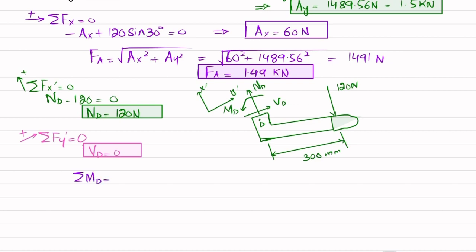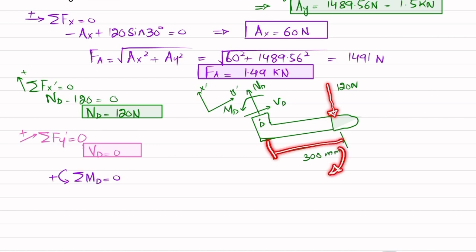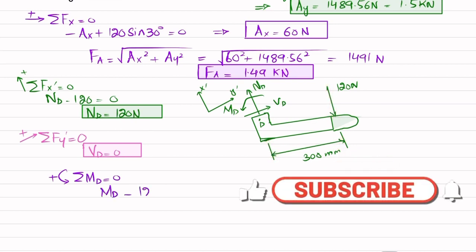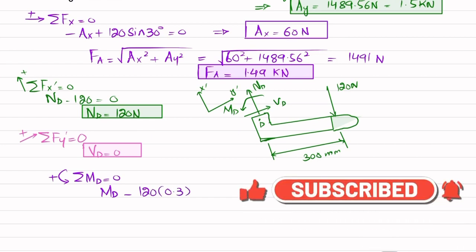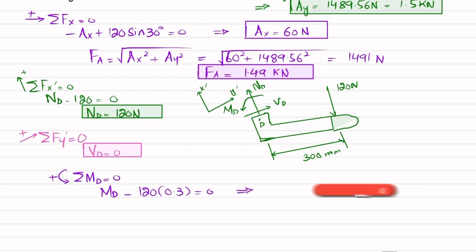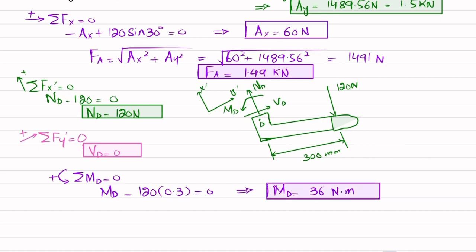We find moment MD by applying ΣM_D = 0, taking counterclockwise as positive. MD is counterclockwise (positive), and the 120 newton force produces a clockwise moment with perpendicular distance 0.3 m. So: MD − 120 × 0.3 = 0, giving MD = 36 newton-meters. Therefore ND, VD, and MD are the internal loadings at point D — this is the answer to the second part.